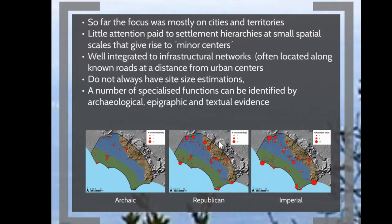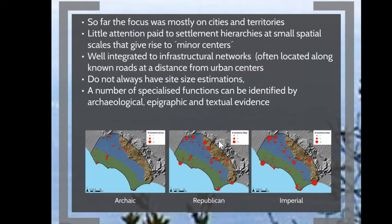In the past, as is often the case in Roman archaeology, research has focused mainly on understanding the relationship between the cities and their territories. But more recently, attention has been paid to smaller central places — what Tim and his colleagues call the minor centers. These are sites that are not always very well investigated; they are not necessarily urban, but nonetheless they have certain central functions identified by archaeological, epigraphic, and textual evidence. We are also not sure about the size of the settlements — some could have been quite large, but in some cases we don't have a site size estimation.